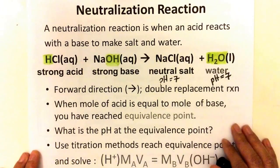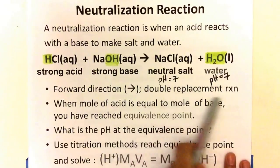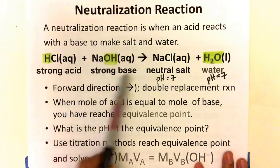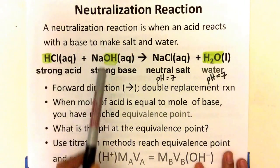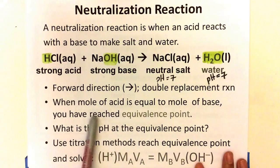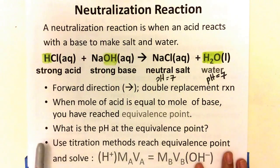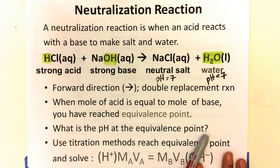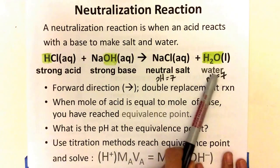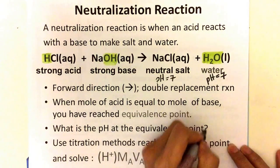In a neutralization reaction, they're all forward directional reactions and they're double replacement reactions. When the moles of acid equals the moles of base stoichiometrically, taking into account the stoichiometry, you've reached something called the equivalence point. That's when moles of acid equals moles of base. What is the pH at the equivalence point? Well, it depends on that salt. We know water's pH is 7, but it depends on that salt. So it varies depending on the salt.